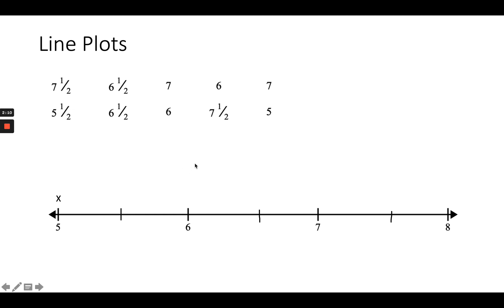I have one five and a half, so I'll put one X above the five and a half. I have two sixes, so I'll put two X's above six, and two six and a halfs, so two X's above six and a half. I have two sevens and two seven and a halfs, so two X's above each. The only value with no X's is eight, because there are no eights in the data set.